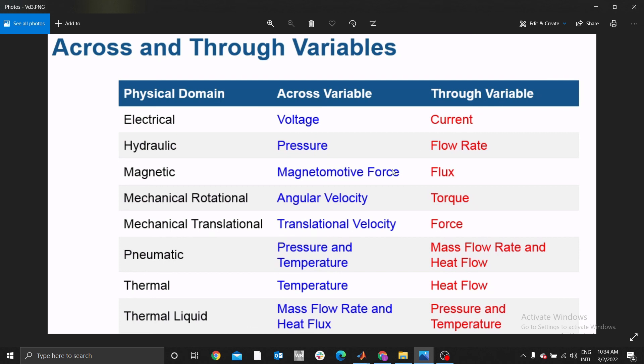Okay, you have to understand all these variables. For example, mechanical rotational: torque is a through variable, but for you to measure the angular velocity, you measure the angular velocity of a specific component using an across variable. This is a cross variable because it is angular velocity across a certain component, but torque is through the system. Similar to pneumatic, thermal, thermal liquid.